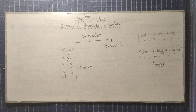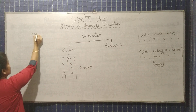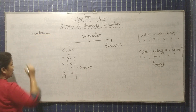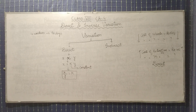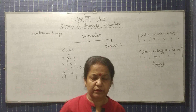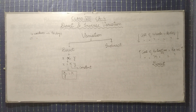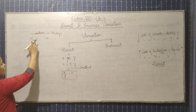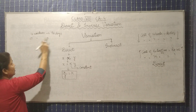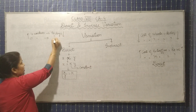Now we will take another example of inverse variation. Suppose that ten workers complete the work in fifty days. Now, if the same work is to be done by seventeen workers, will it take more days or fewer days? Here, we increased the number of workers, so the number of days will be less.